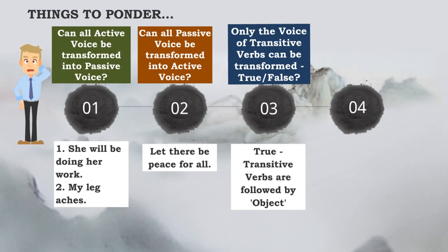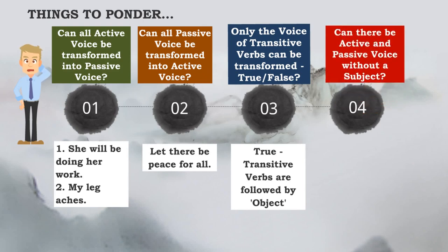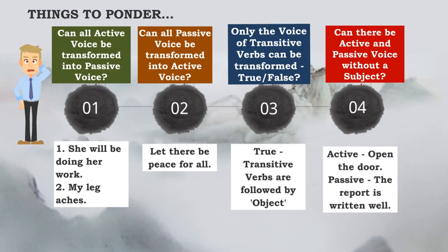If I say 'He ran swiftly' or 'He cut swiftly,' I cannot transform this into passive. But if I say 'He cut an apple,' I can always say 'An apple was cut by him.' An object must be there, and the verb that carries an object is always a transitive verb. Also, can there be active and passive voice without a subject? In an imperative sentence, the subject is not there. Even in passive voice, 'by him' or 'by whom' need not be specified. For example, 'The report is written well' — no subject is given. It is not necessary that the subject should be there; but if the object is not there, we cannot transform.